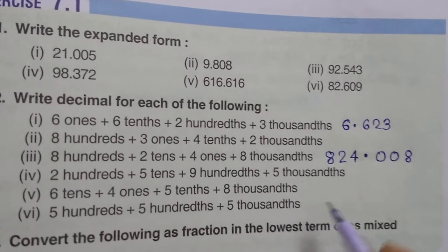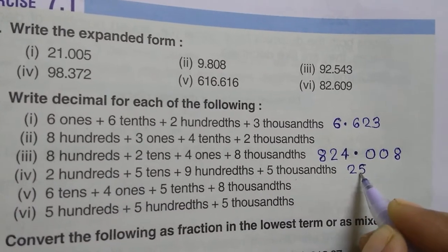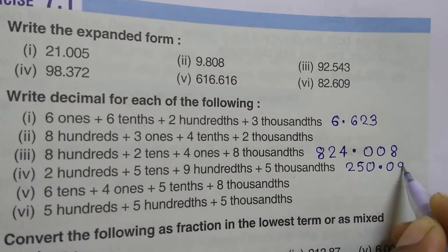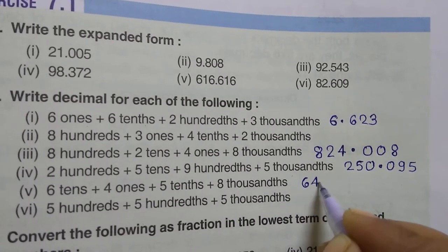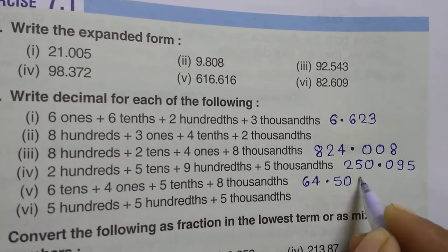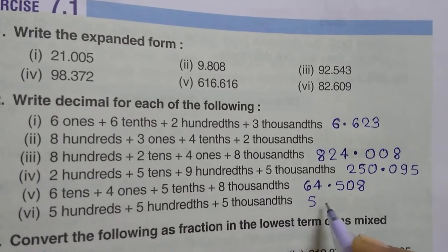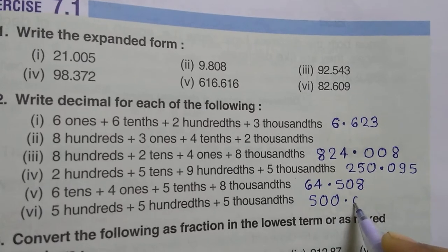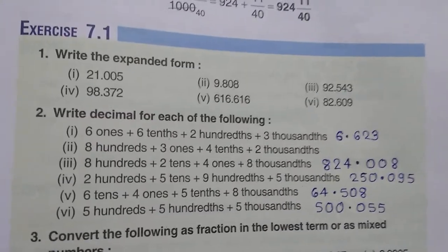For questions 4, 5, and 6, I will explain orally. Question 4: 200 hundreds, 5 in tenths, ones box empty, tenths empty, hundredths 9, thousandths 5. Question 5: six hundreds, four ones, five tenths, hundredths 0, thousandths 8. Question 6: five hundreds, tens zero, ones zero, decimal, tenths 0, hundredths 5, thousandths 5. This way you can easily complete question number 2.